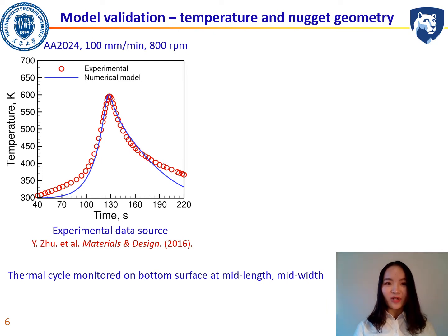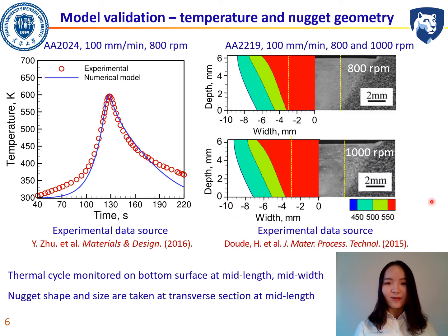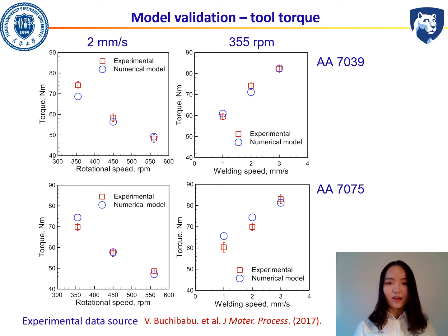This numerical model has been very well validated by experimental results. As we can see here, the temperature-time curves from simulation and experiment show almost the same trend. The cross-section of the weld joint also shows very good agreement. In addition, this model has also been validated by tool torque measurements for two different materials and various welding conditions.